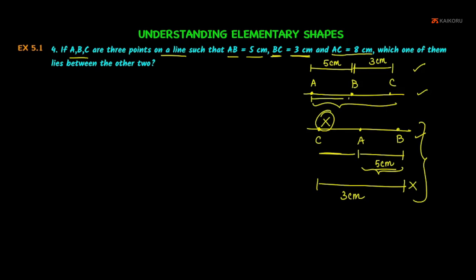If you get it, AC is 8 cm. That's why in the distance, here are the points on the line, 8 cm. Which one of them lies between the other two? Here are the points. AB is 5 cm, BC is 3 cm, AC is 8 cm.